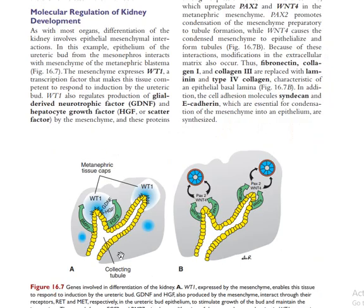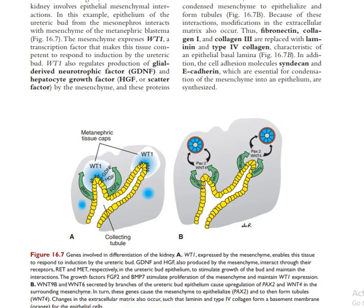How does the collecting duct induce the metanephric blastema to produce the different renal vesicles? BMP7 and FGF2 factors cause the WT1 gene to be activated. The WT1 activation then causes formation of the renal vesicles. Inside this pathway are also Wnt9 and Wnt6, and Pax2, as well as Wnt4, all of which together drive production of Pax2 in the cells, inducing the formation of renal vesicles.